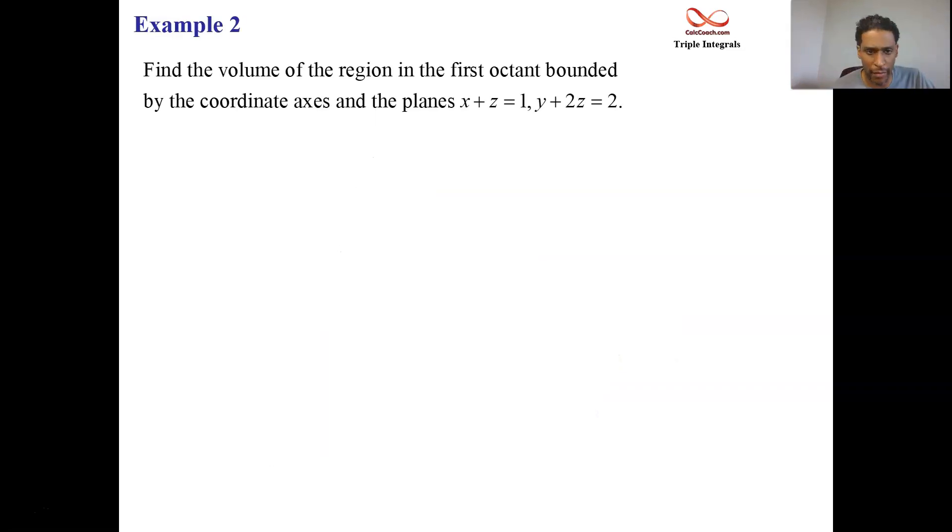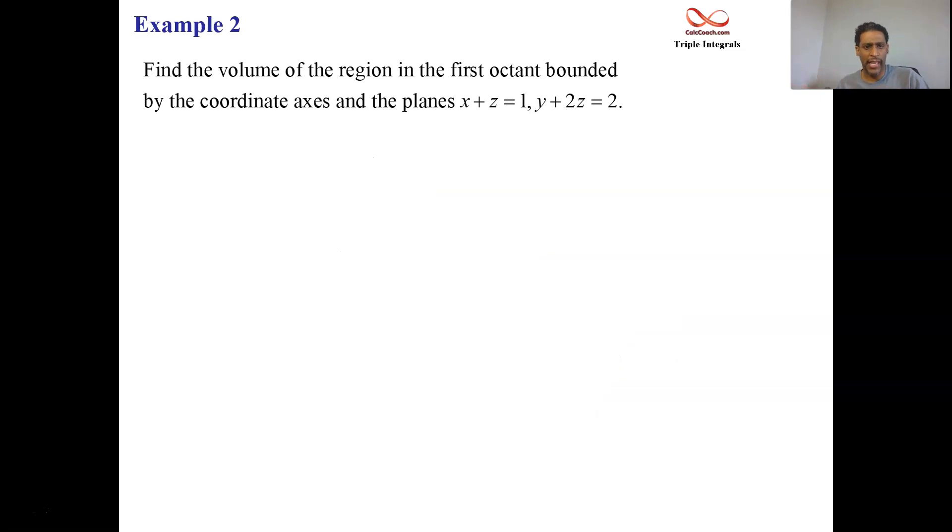All right. So here's the actual statement of the problem. The two names of the planes are x plus z equals one, y plus two z equals two. In this picture that I've drawn here, I have those planes drawn in. I wouldn't expect you to have to be able to draw that yourself, but you could. The pink plane of the pink triangle is part of a plane and it's to represent the y plus two z equals two.